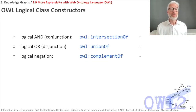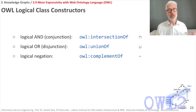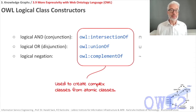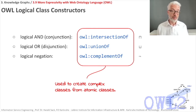To create further complex classes, we can use logical class constructors: logical AND, which is the OWL intersection; logical OR, which is the union of classes; or the complement, which is logical negation. Using any combination of classes and class descriptions, we can create more complex classes from atomic classes, and then make them even more complex.